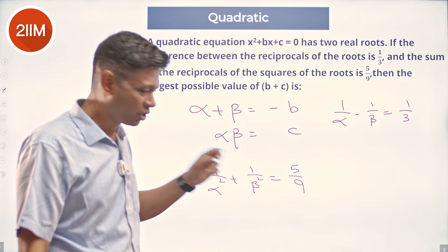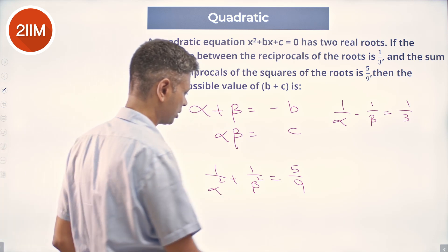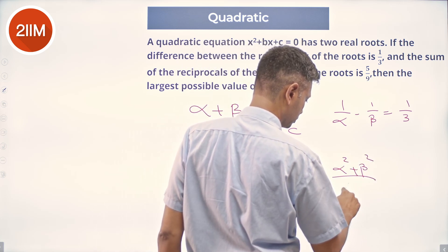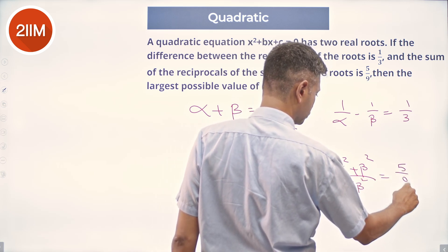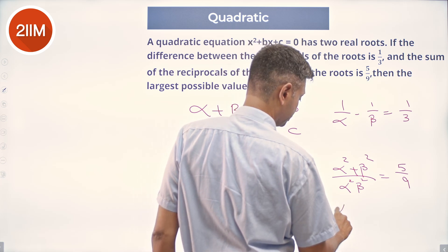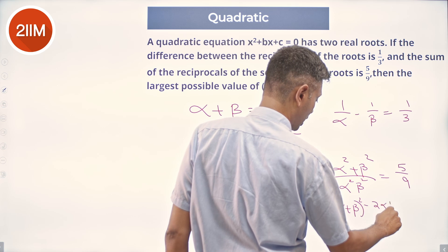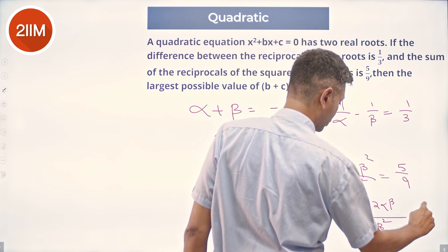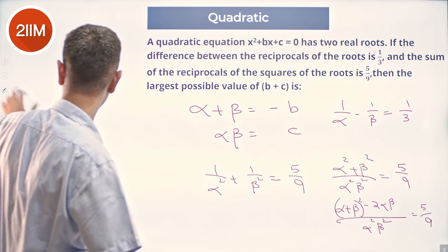We can work with 1/α² + 1/β² = 5/9 because it simplifies nicely. This becomes (α² + β²) / (α²β²) = 5/9, and α² + β² = (α + β)² − 2αβ. So we get [(α + β)² − 2αβ] / (αβ)² = 5/9, which is (b² − 2c) / c² = 5/9.